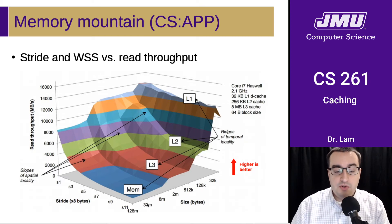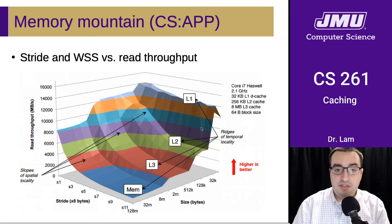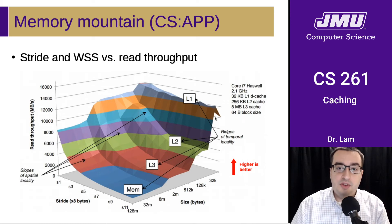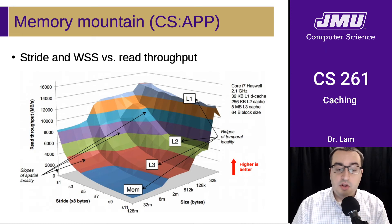On the working set size axis, you can see these bumps — these ridges. As the textbook authors point out, these are ridges of temporal locality: things that are accessed together. If you can fit them into higher levels of cache, you see these spikes in performance. And then you have these slopes of spatial locality, where if you're not taking advantage of accessing things that are close together, your read throughput is going to go down.